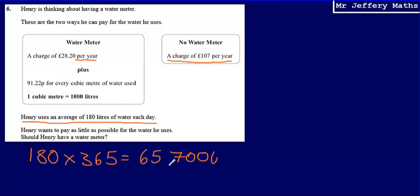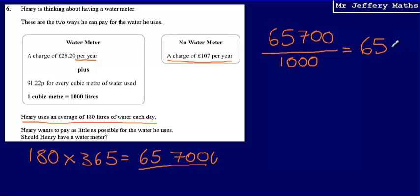So what we're going to have to do is turn our 65,700 liters into cubic meters. And the way that we're going to do that is by dividing by 1000. So I'm going to take 65,700 and I'm going to divide that by 1000 to tell me how many cubic meters Henry uses per year. So 65,700 divided by 1000 is going to be 65.7.